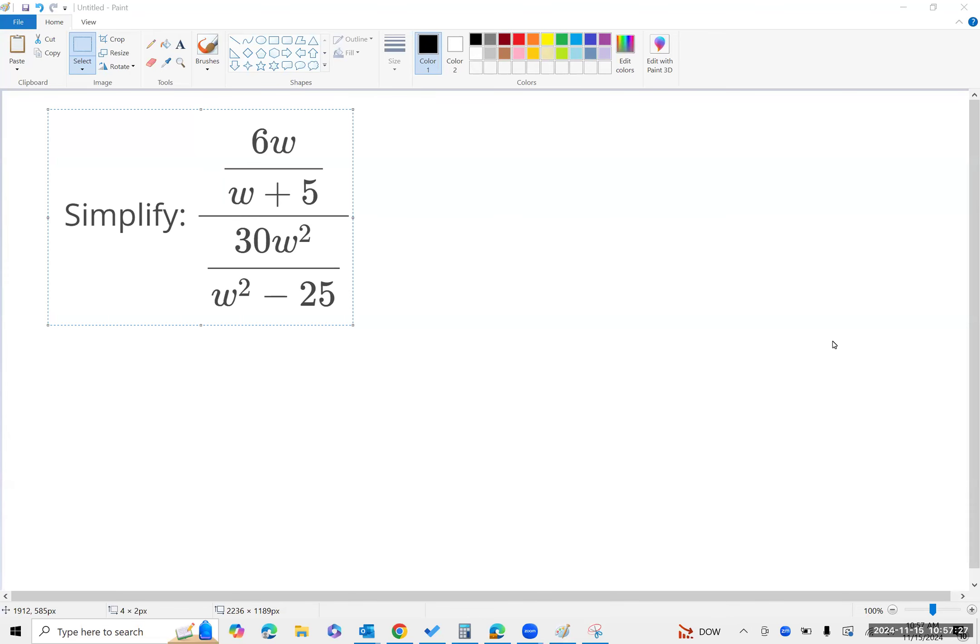Okay, so this is simplify, and the main thing that you need to notice on this one is that this here is the fraction bar. It actually works as a division symbol, so really what you're doing is you're taking 6w over w plus 5 and you're dividing it by 30w squared over w squared minus 25.